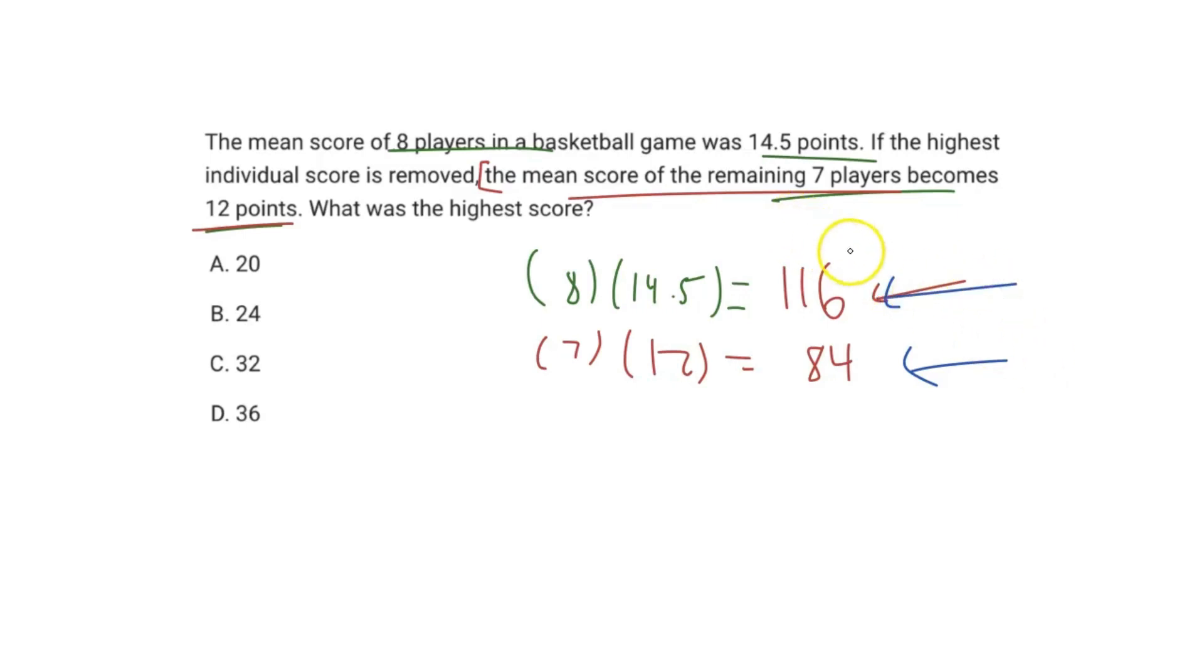Now where is this value of 116 again? Well, 116 is when we multiply the eight players, so that is including the highest score, by the total mean of all eight players, which was 14.5, to get the total number of points they scored. And so because our value of 84 was calculated without our highest score, the difference between the two totals here, 116 and 84, will be the number of total points that the person who scored the most points actually had.